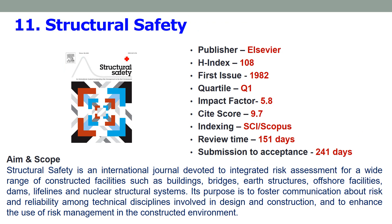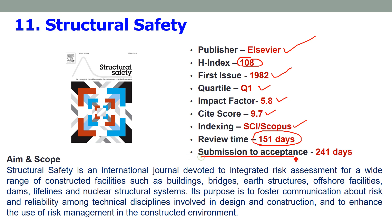Eleventh is Structural Safety, also one of the topmost journals with an H-index of 108, published by Elsevier. The first issue was published in 1982. It is a Quartile 1 journal with an impact factor of 5.8 and a site score of 9.7. It is also an SCI and Scopus indexed journal with a review time of 151 days — about 5 months — and submission to acceptance of 241 days, meaning almost 8 months. The scope covers integrated risk assessment for a wide range of constructed facilities including building structures, bridges, earth structures, offshore facilities, dams, and nuclear structures.